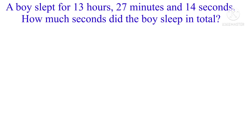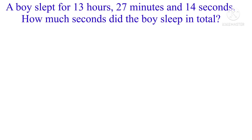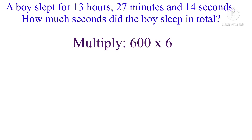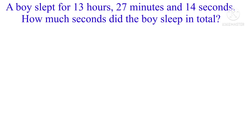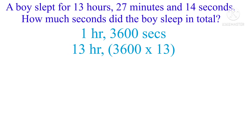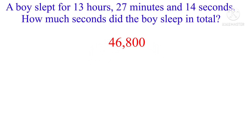Now we have hours, so we need to discuss how many seconds are in one hour. If 60 seconds mean one minute, then 600 seconds would mean 10 minutes, and 60 minutes mean one hour. We multiply 600 times 6 and get 3600 — so one hour means 3600 seconds. If we are looking at 13 hours, and one hour means 3600 seconds, then 13 times 3600 is 46,800 seconds.